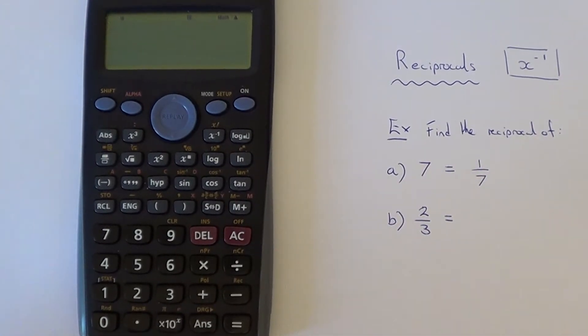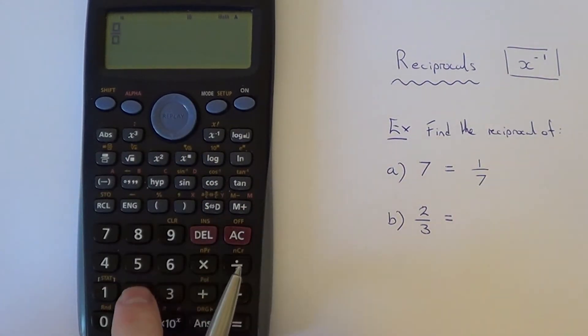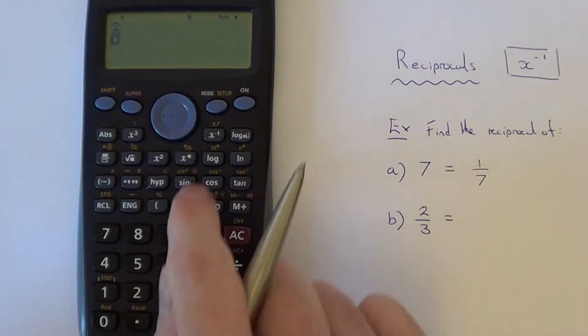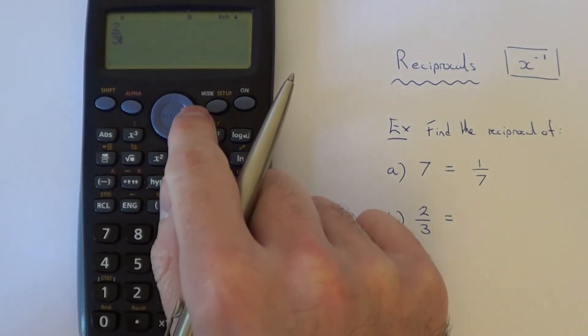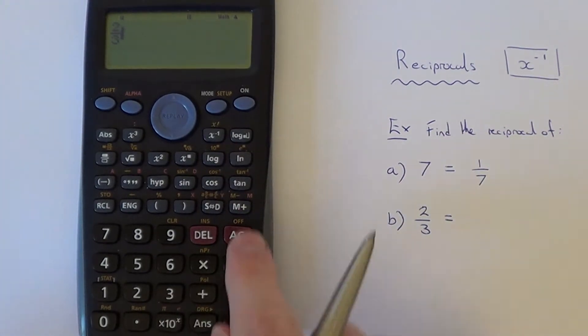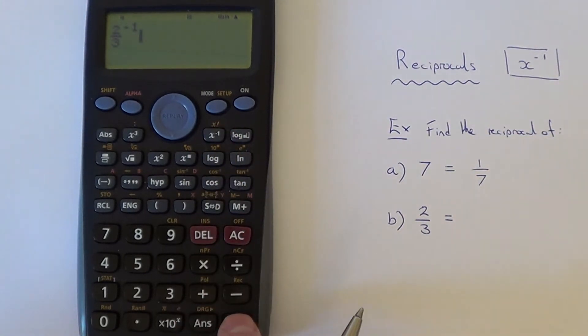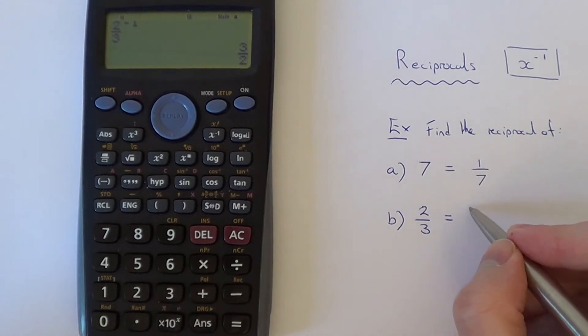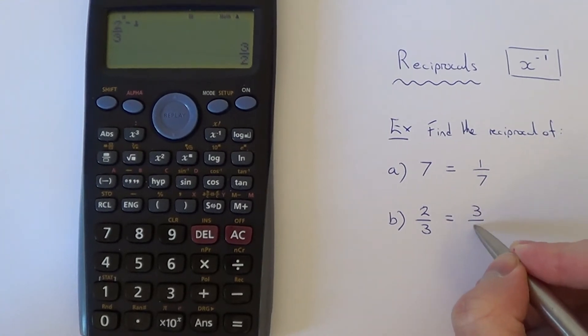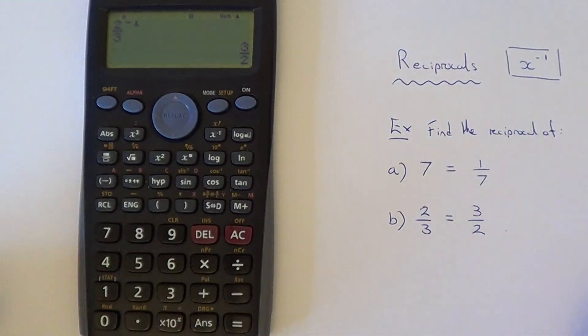So example 2 then, we've got the reciprocal of 2/3. This time we'll need to type the fraction in. And again if we just hit our reciprocal key now, hit the equals and that will give us an answer of 3 over 2. So thanks for watching.